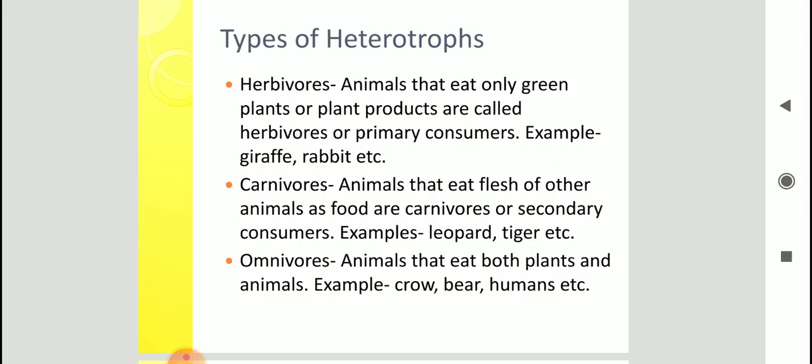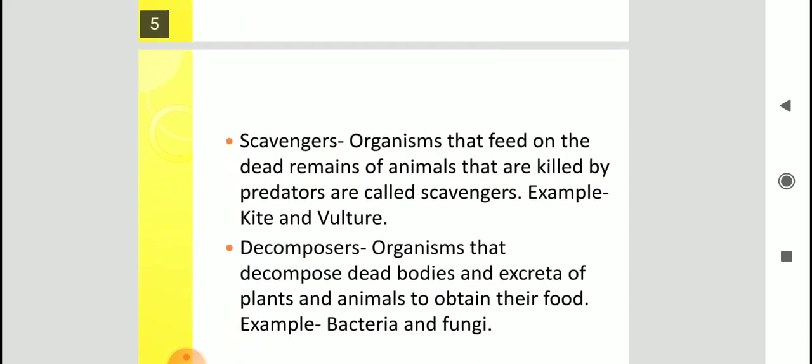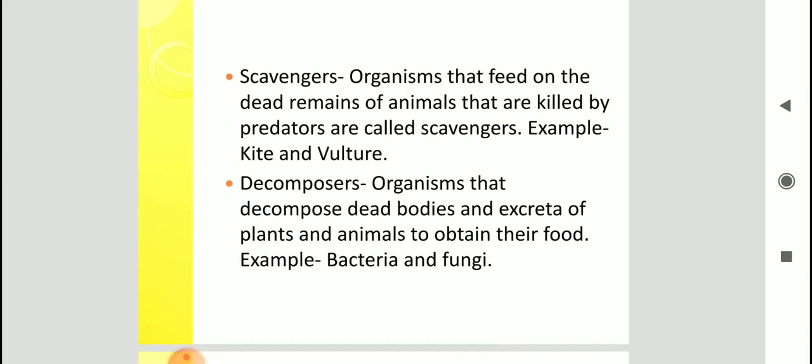Apart from these three categories, we have two more. Scavengers. Children scavenge means to clean. So scavengers are those organisms that feed on dead remains of animals that are killed by predators. So the dead bodies, the dead animals, those and the dead plants, they are all cleaned. They are converted into simpler forms and then digested by some organisms. So they are known as scavengers. Examples, kite and vulture. You all know that kite and vulture, they eat all the dead bodies, the dead remains of animals.